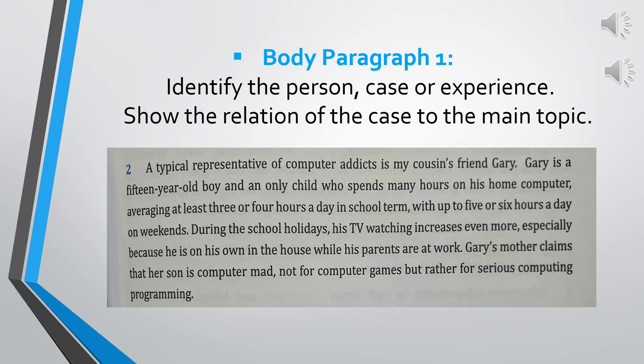So what does a writer do in the first body paragraph of a case study essay? As you can notice in the sample essay, the writer identifies the person and the social group of the subject of study — his cousin's friend Gary — giving some information about his age and social status. The writer also shows how the subject of the case, Gary, is related to the essay's main topic or issue, which is technology addiction and its symptoms.